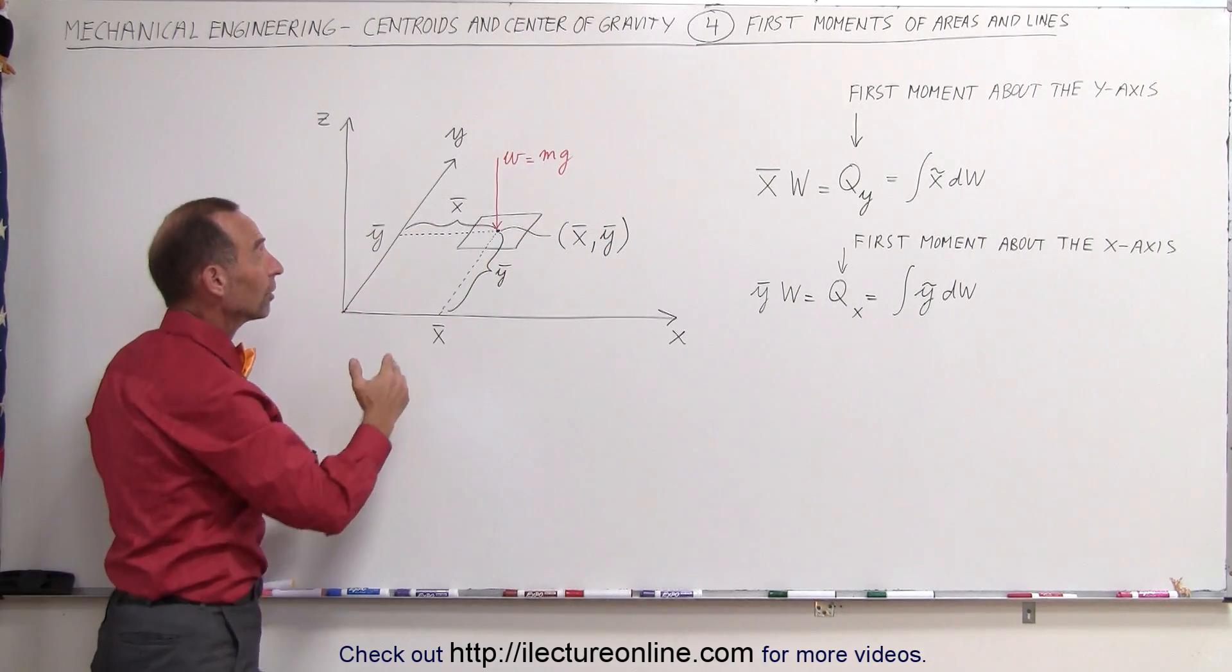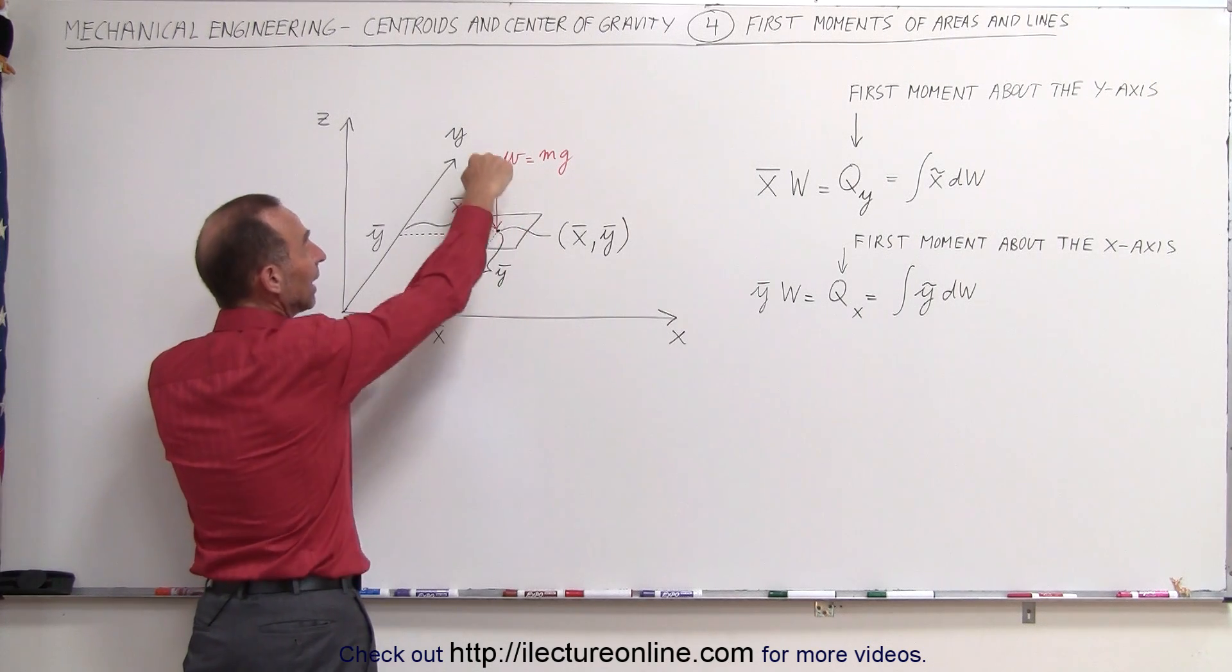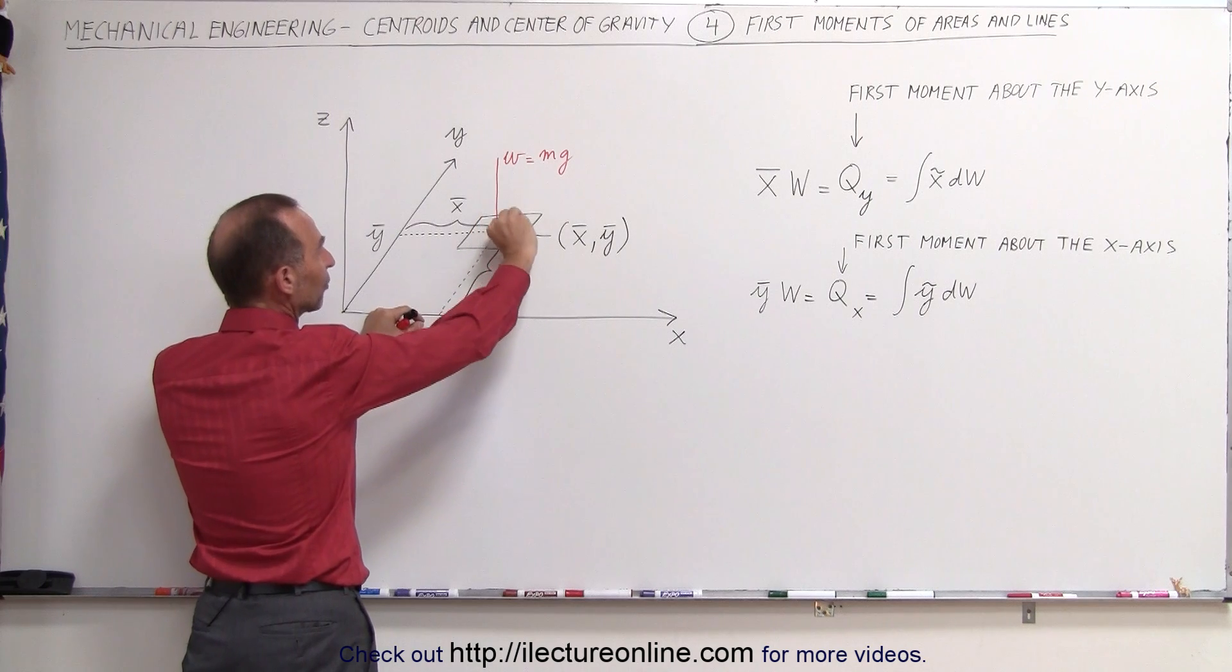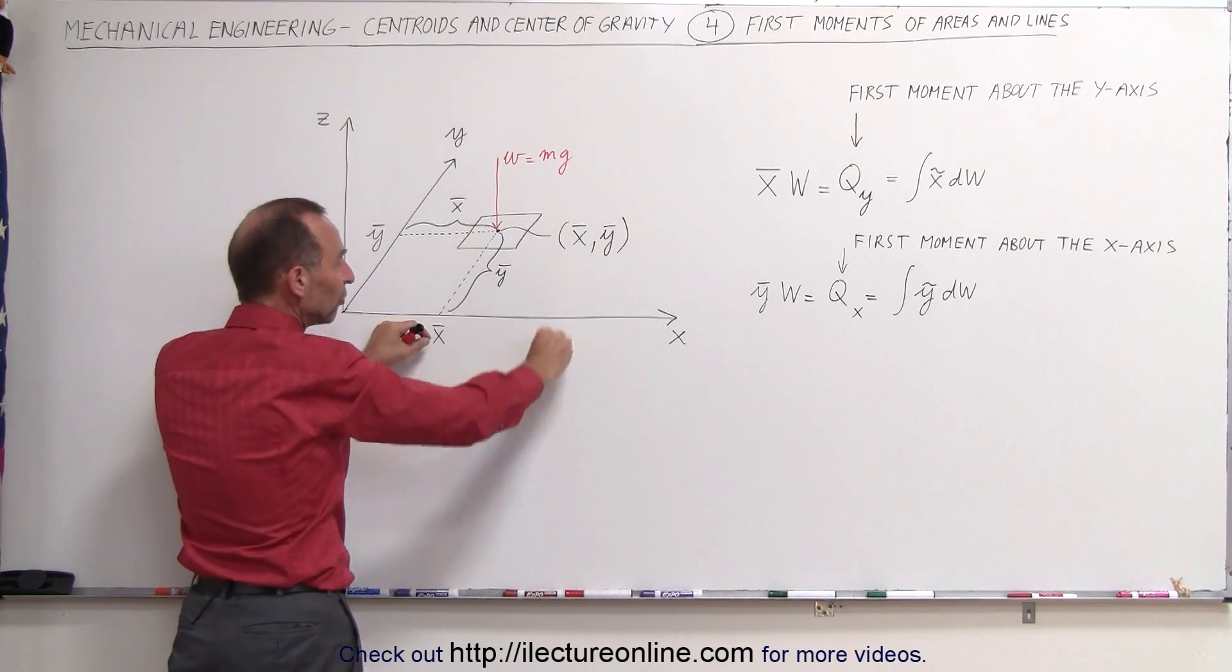In the same way, we can also call that the moment about the x-axis. Again, we have the weight here, this is the distance away from the x-axis, and that gives us a moment in this direction.